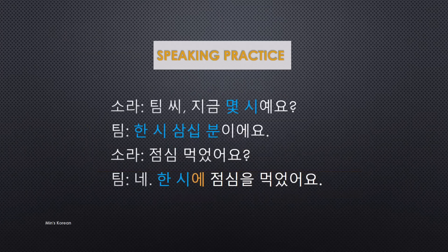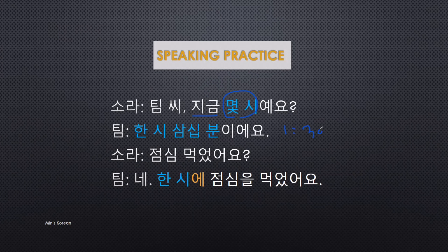Speaking practice with two people, 소라 and 팀. 소라 asks: 팀 씨, 지금 몇 시에요? — 'Tim, what time is it now?' 팀 answers: 한 시 삼십 분이에요 — 'It's 1:30.' 한 is Native Korean for one with 시, and 삼십 is Sino-Korean for 30 with 분, so 한 시 삼십 분이에요 means 'It's one thirty.'